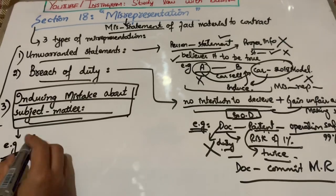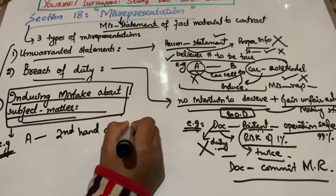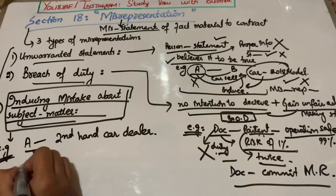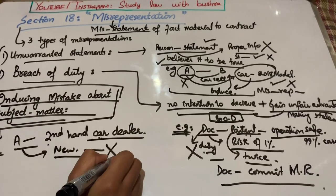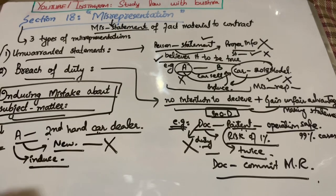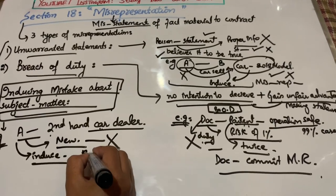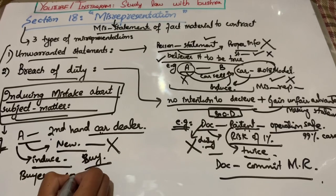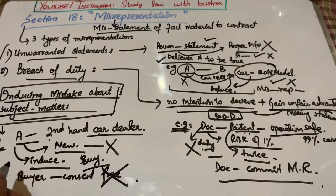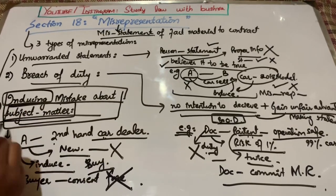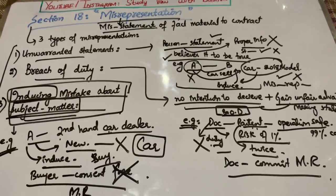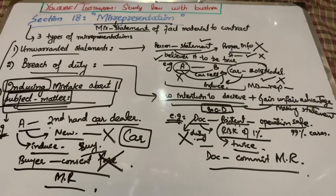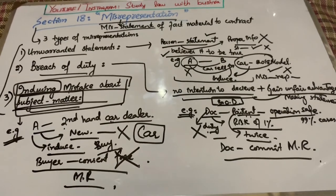Next آ جاتا ہے inducing mistake about the subject matter. اس کو example سے دیکھتے ہیں. A جو ہے وہ second-hand car dealer ہے. وہ اپنی car کو بیچتے وقت کہتا ہے کہ جو car میں sale کر رہا ہوں وہ بالکل ٹھیک ہے. لیکن actually وہ car ٹھیک نہیں ہوتی، اس میں کوئی نہ کوئی damage ہوا ہوتا ہے. لیکن وہ دوسرے بندے کو نہیں بتا رہا، وہ اسے induce کر رہا ہے کہ وہ car خریدے. تو یہاں جو بندہ car خریدے گا اس کی consent free نہیں ہے بلکہ obtain ہوئی ہے through misrepresentation. تو یہ misrepresentation ہے جو ہم نے تین types پڑھی.